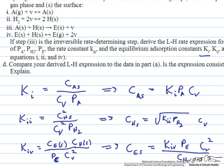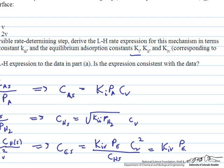Looking ahead, it will be useful to eliminate the concentration of hydrogen on the surface. Plugging in the expression for C_HS simplifies things: we get K₄ times the partial pressure of ethylene over the square root of K₂ times the partial pressure of hydrogen, and we actually lose one power of the concentration of vacant sites in the process. Now we've expressed concentrations for all bound species in terms of the concentration of vacant sites, equilibrium constants, and partial pressures.